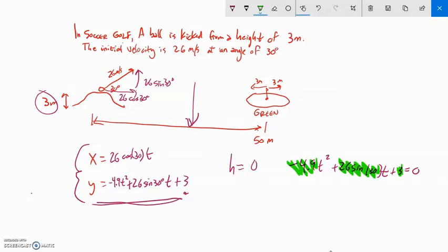I'm using the quadratic formula. I get two answers: one is negative 0.213, and the other is about 2.866.